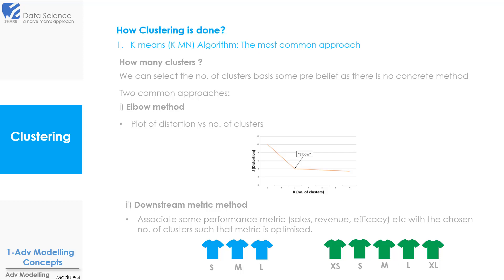So basically the downstream metric will be your yardstick in deciding the number of clusters. It could come from your past experience, your knowledge of trade, etc.